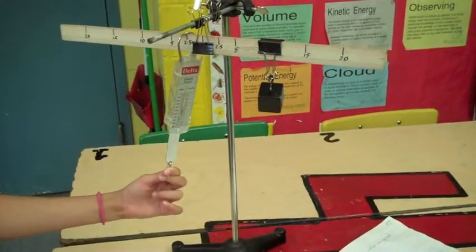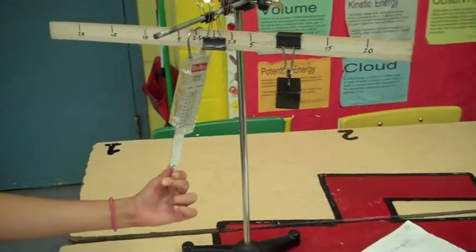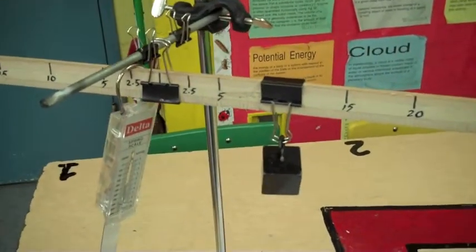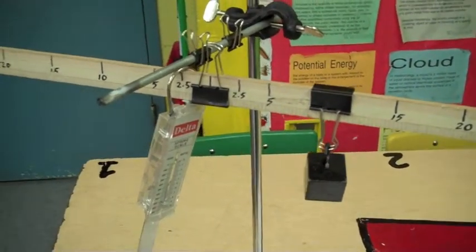When starting on our lever experiments, we're going to the first class lever, which has its fulcrum in the middle, a load on one side, and the effort on the other.